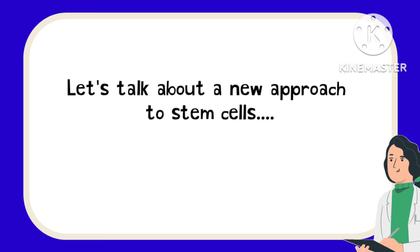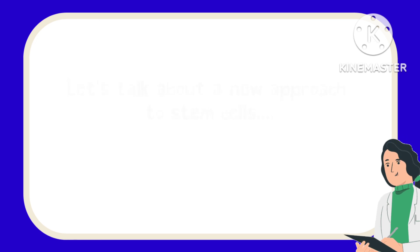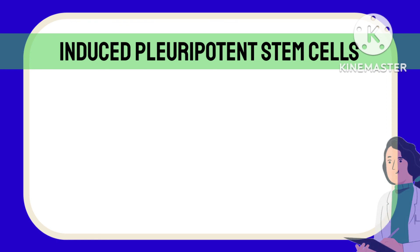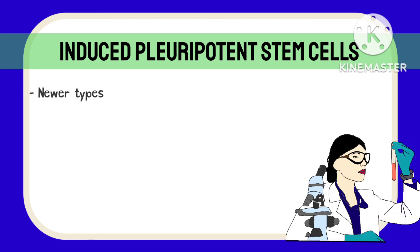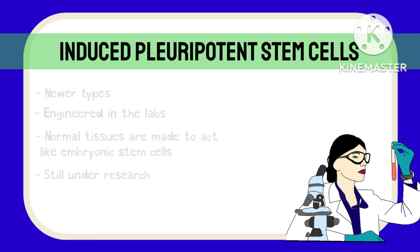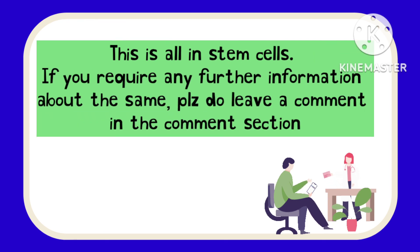A newer approach to stem cells is induced pluripotent stem cells. These are engineered in the lab to allow normal tissues or cells to behave like embryonic stem cells. They are still being researched and are not yet widely used.